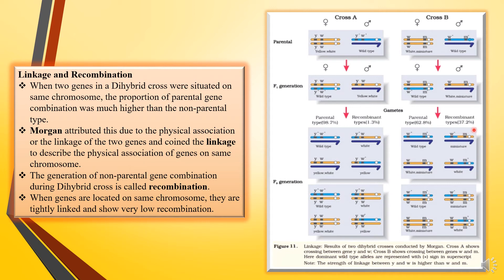In Cross B, the female produces gametes: WM, W+M+, and through crossing over, W+M and WM+. The Y chromosome comes from the father. The male's X chromosome also comes from the father. The number of recombinants produced in the F2 generation was far more compared to Cross A.